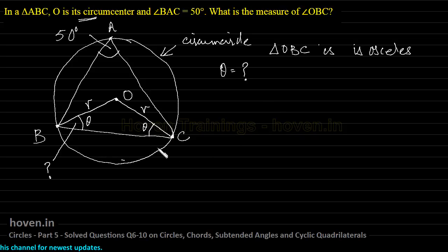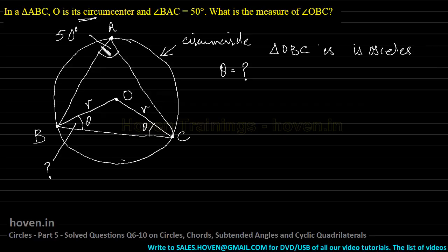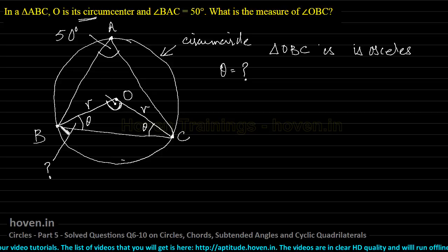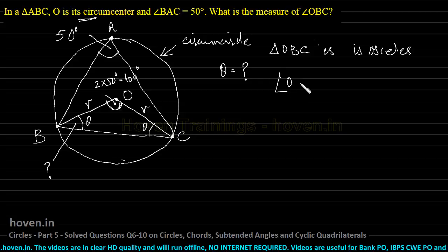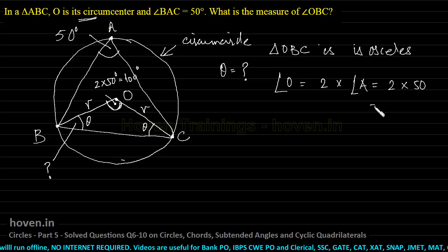Now let us look at the figure from another perspective. BC is an arc, and it subtends an angle of 50 degrees on the periphery of the circle at point A. From the basic theorem, the angle subtended by an arc at the center is 2 times the angle subtended at the periphery. So the angle at center O subtended by arc BC will be 2 × 50 degrees = 100 degrees. Therefore angle BOC = 2 × angle BAC = 2 × 50 = 100 degrees.